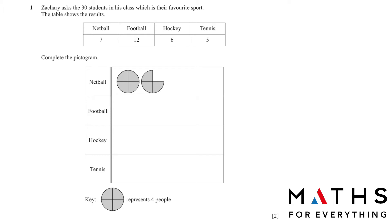Let's start. Zakari asked the 30 students in his class which is their favorite sport. The table shows the results. We have netball, football, hockey and tennis. Complete the pictogram. The key is the whole circle in four parts represents four people. Now we have 12 for football. So this is 1 circle which is 4, this is 8, and 4 more makes 12. So you just count the number of circles.